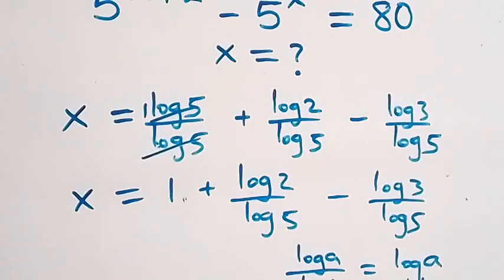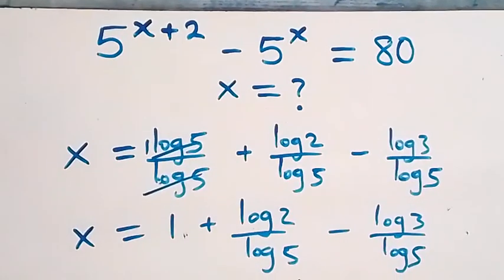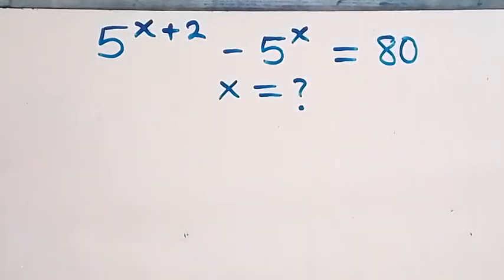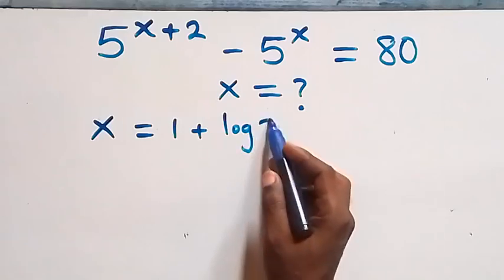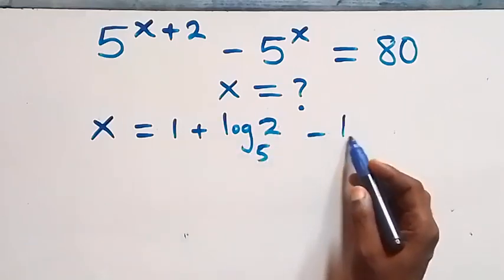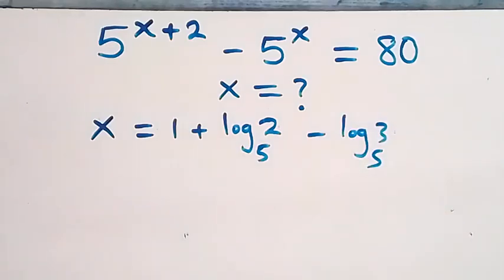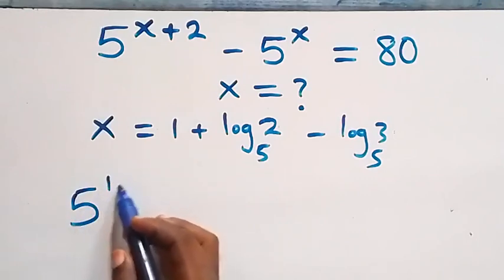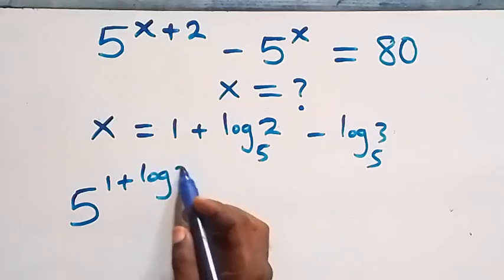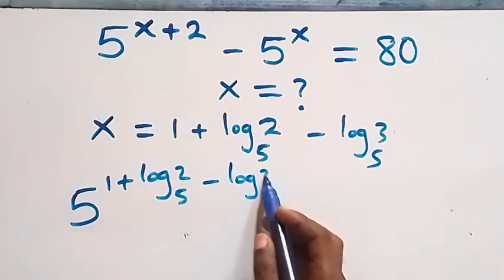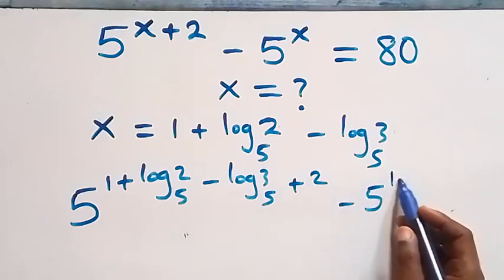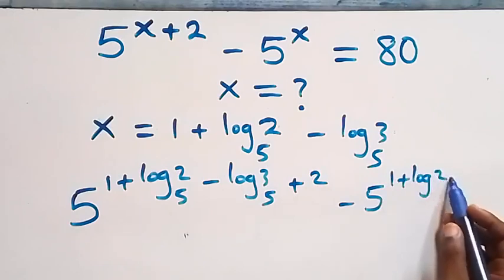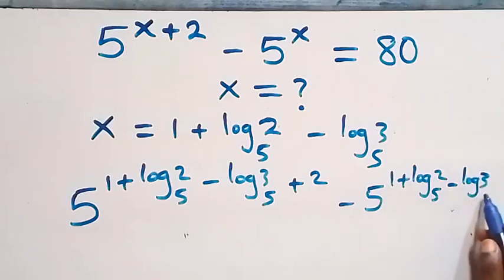We substitute x equals 1 plus log₅2 minus log₅3 back into the equation. We get 5 raised to power (1 plus log₅2 minus log₅3) plus 2, then minus 5 raised to power (1 plus log₅2 minus log₅3), equals 80.